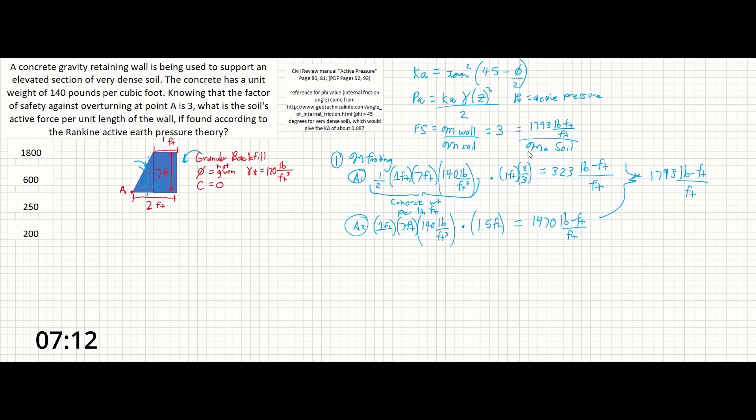So solving for that real fast gives us, and I'll just write it down here, MA soil equals 597.8 pound feet per linear foot.